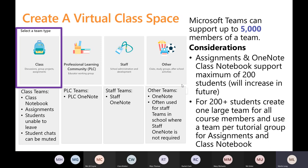As you can see, you can get 5,000 members in a team, and in a OneNote Class Notebook you can get up to 200 pupils. It does tend to get a little slower the more you get in there. I would say the golden rule is not to have more than 50 pupils or students in a OneNote, although it will go up to 200.